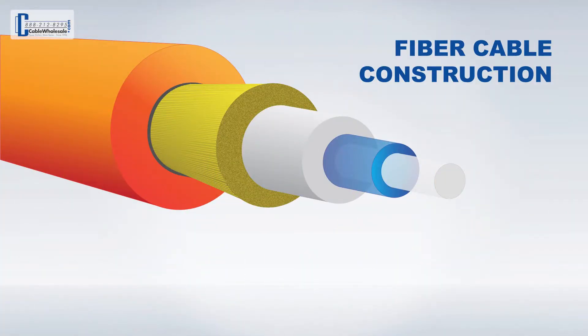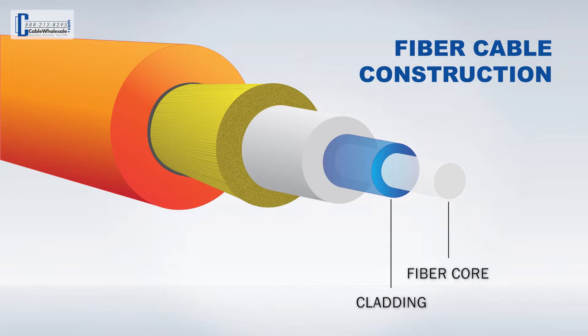Juan, can you break down the components that make up a fiber optic cable? Sure, Miguel — we have a nice graphic here that shows the different parts. Starting at the center, we have the core. Surrounding the core is the cladding, a layer that reflects light back into the core to prevent signal loss. The coating, also known as the buffer, provides additional protection against damage and organizes the fibers within the cable.